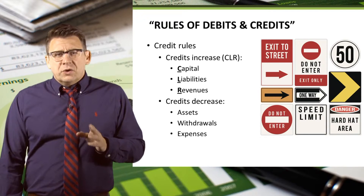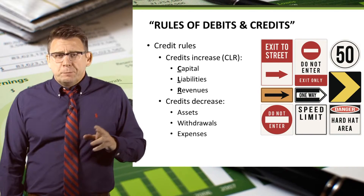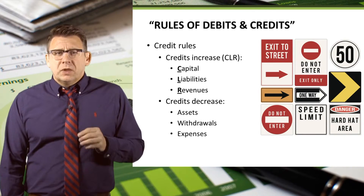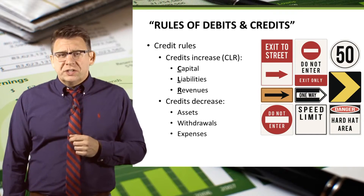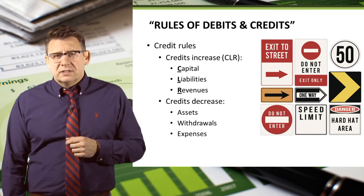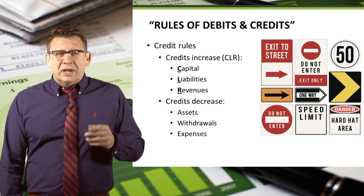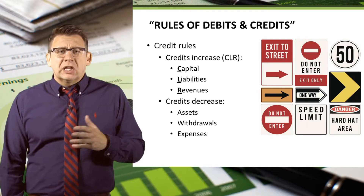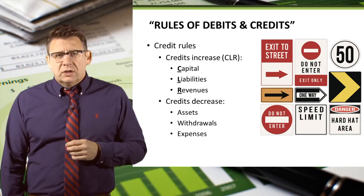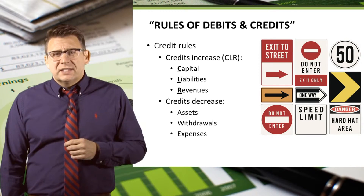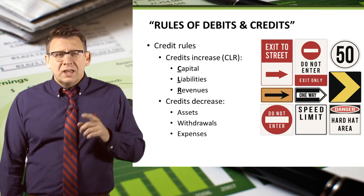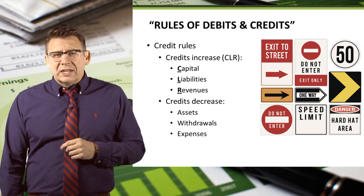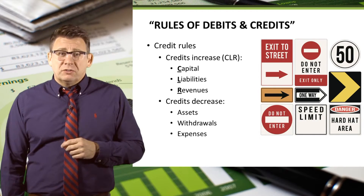The credit rules are as follows: capital, liabilities, and revenues are all increased by credits. I remember this with the acronym CLEAR — credits increase CLEAR. The normal balance of capital, liabilities, and revenues are credit balances.